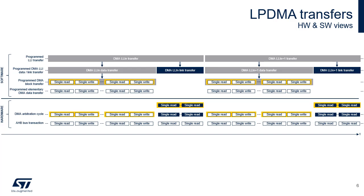The data transfer is a block transfer — in other words, a series of single reads followed by single writes. The link transfer is composed of single data reads, each of them requiring an arbitration cycle and a transfer over the AHB master port. The link transfer updates channel control registers from values read from a structure in memory.